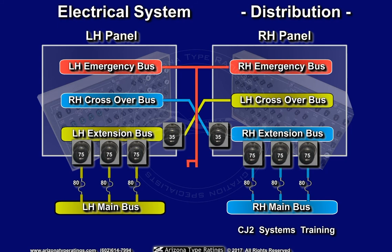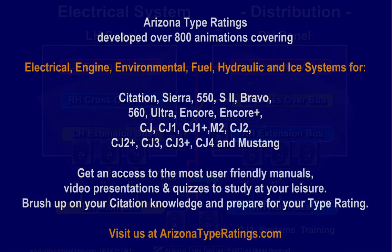A separate feed connects the emergency buses to the emergency power relay. Each possible source for the emergency bus is protected by a circuit breaker.